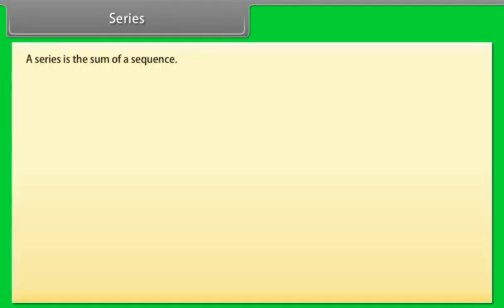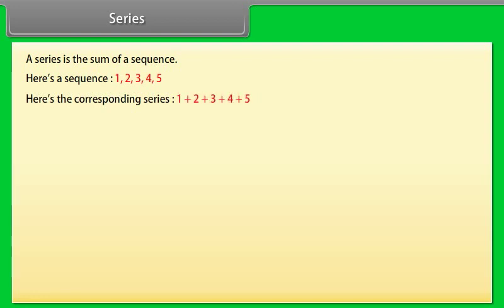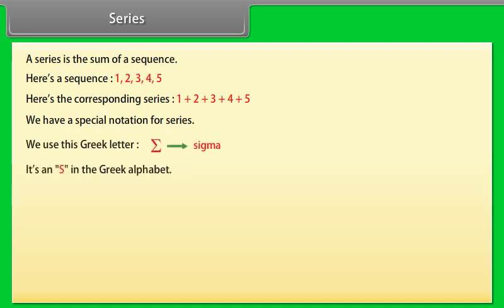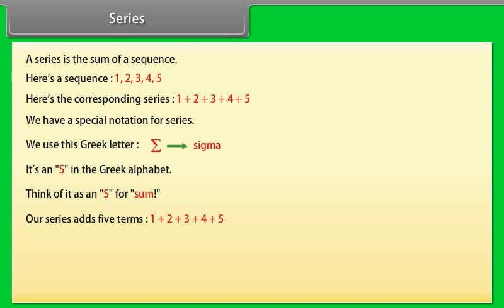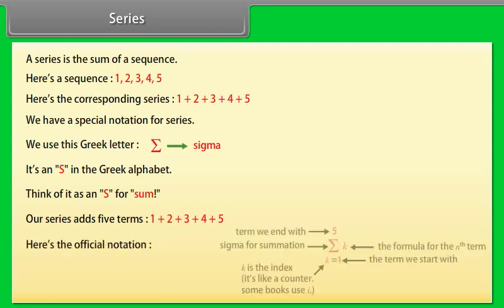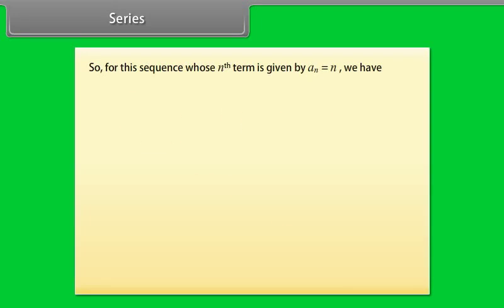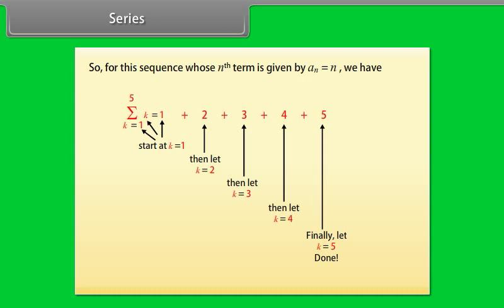Series: A series is the sum of a sequence. Here is a sequence: 1, 2, 3, 4, 5. Here is the corresponding series: 1 + 2 + 3 + 4 + 5. We have a special notation for series — we use the Greek letter sigma, which is an S in the Greek alphabet, think of it as S for sum. Our series adds 5 terms. The official notation is summation from k=1 to 5 of k. For this sequence whose nth term is a(n) = n, the summation is found to be 15.